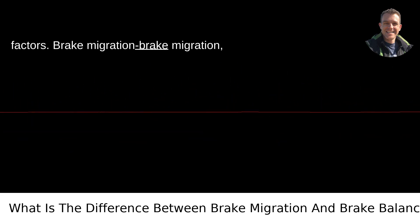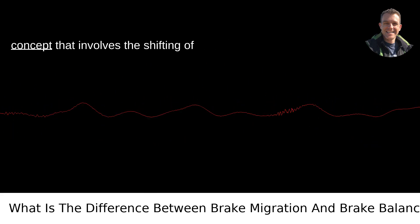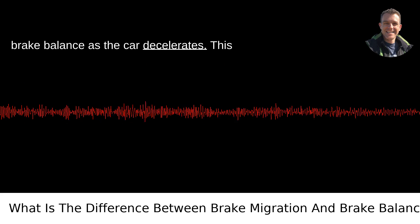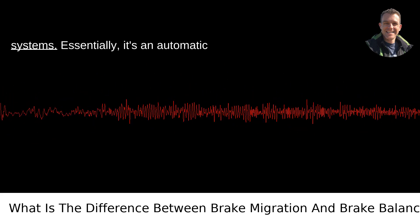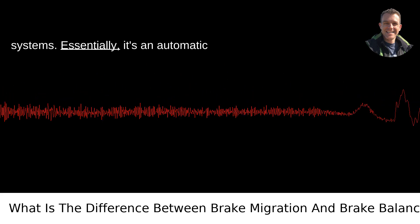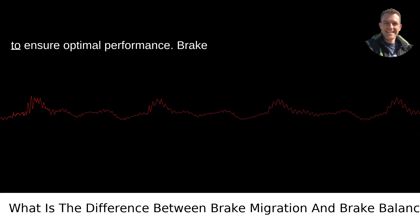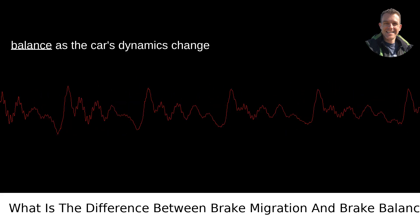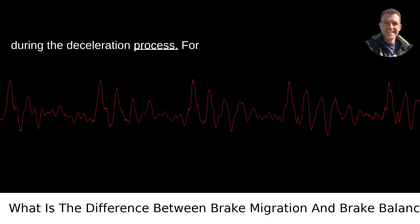Brake migration, on the other hand, is a more sophisticated concept that involves the shifting of brake balance as the car decelerates. This is controlled by the car's electronic systems — essentially an automatic adjustment that takes place during braking to ensure optimal performance. Brake migration aims to maintain the ideal brake balance as the car's dynamics change during the deceleration process.